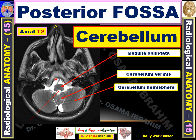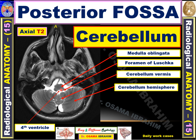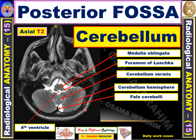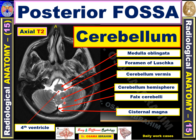What about the fluids in the posterior fossa? CSF appears bright on T2. The CSF between the brainstem and cerebellar vermis is called the fourth ventricle. The fourth ventricle connects to the subarachnoid spaces through three apertures: the foramen of Luschka on both the left and right sides, and there is also fluid called the cisterna magna, posterior to the cerebellar vermis.